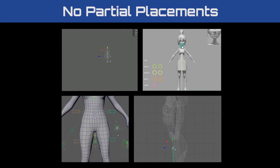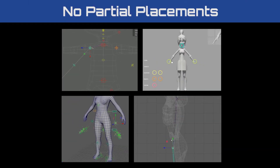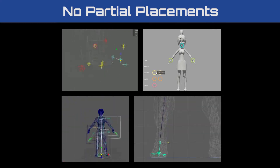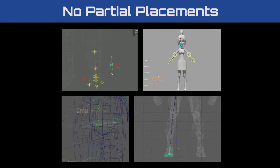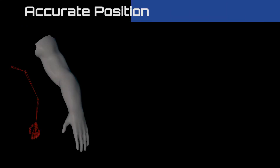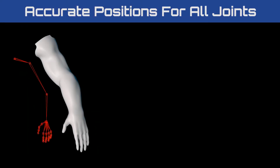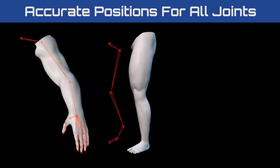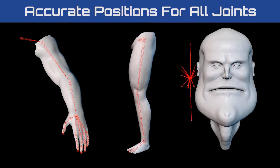We're not talking about the initial sizing and placement of rig templates that many packages offer. We're talking about achieving accurate placement of fine detail areas like fingers, elbows, knees, and facial joints, leaving no manual adjustment needed.